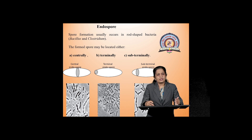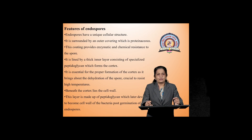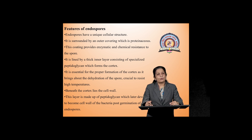In the first diagram we have shown the central position of the spore. In the second diagram, the terminal position of the spores inside the cell is shown. In the third diagram we can see sub-terminal location of the endospore. Now, there are some specific features of the endospores. Endospores have a very unique cellular structure. They are surrounded by an outer covering, and this outer covering is made up of protein — they have a proteinaceous outer covering.